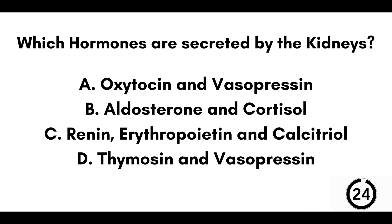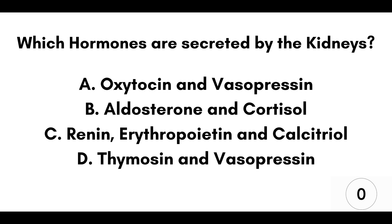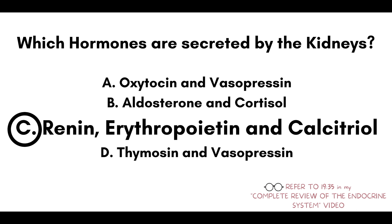Question: which hormones are secreted by the kidneys? A) Oxytocin and vasopressin. B) Aldosterone and cortisol. C) Renin, erythropoietin, and calcitriol. Or D) Thymocin and vasopressin. Our answer here is C, renin, erythropoietin, and calcitriol.